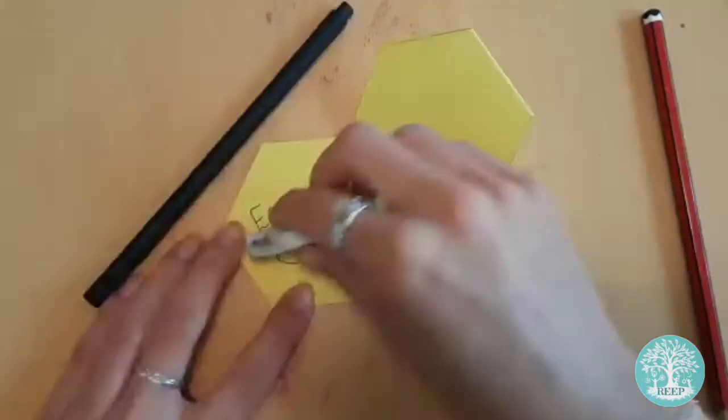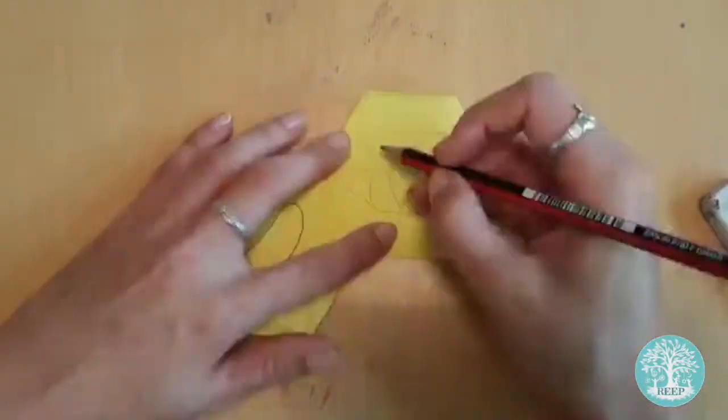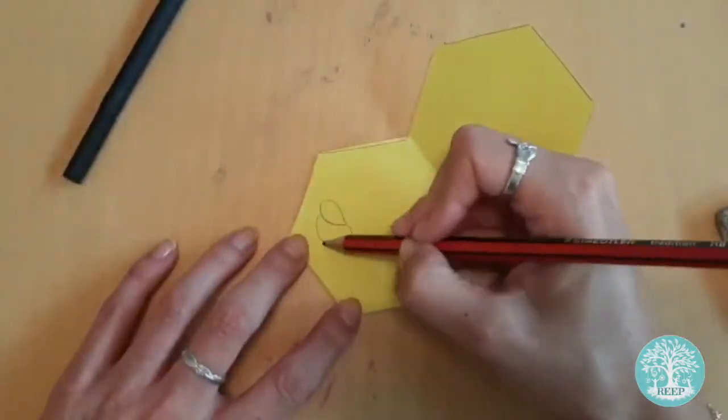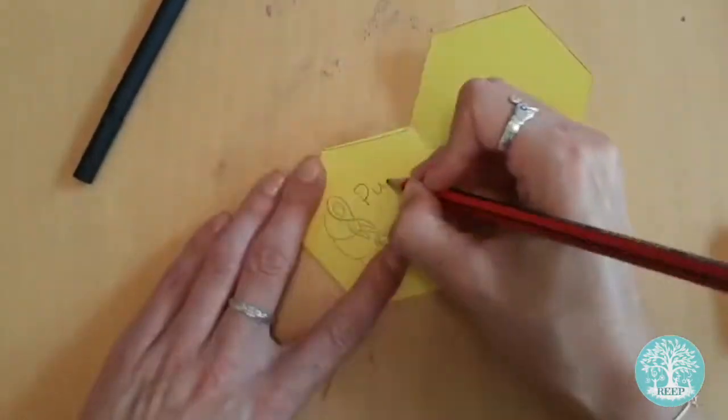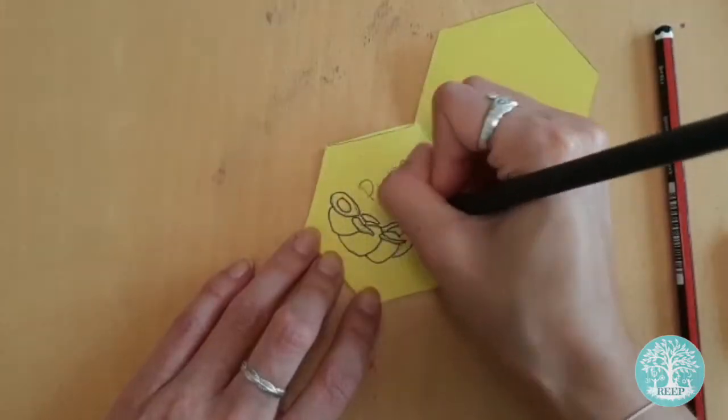Now it's time to draw. Open out your booklet and starting with stage one on the left, draw and label the four stages of a honeybee's life cycle on each page. You can use page two to help you.